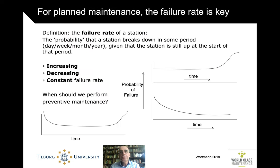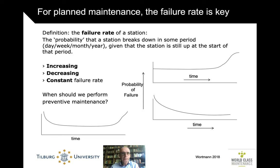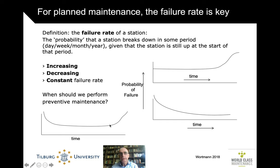For planned maintenance, the failure rate becomes key. How high is the likelihood that an asset breaks down in some period, given that it's still up at the beginning? Those failure rates may go up and down. If they're pretty constant, then it doesn't really matter when you do the maintenance, because every time there's an equally high likelihood that failures will occur. If the failure rate is going up, you want to be sure you don't do the maintenance too late. In the classical bathtub curve, there is some infant mortality, then a long period with a flat constant failure rate, and towards end of life things go up. That determines the choice for planned maintenance.